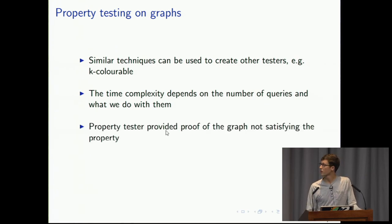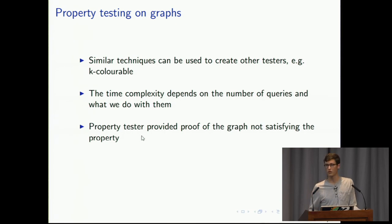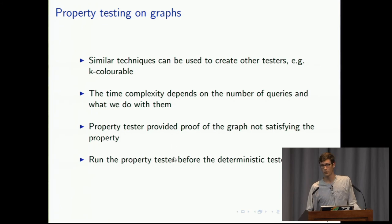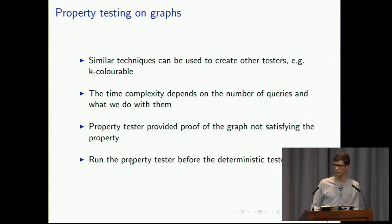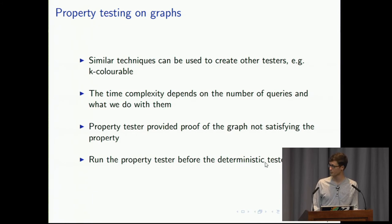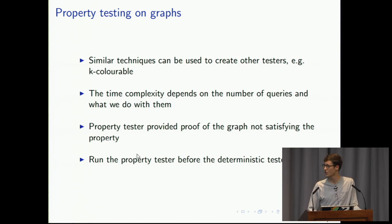Remember that the property tester for bipartiteness provided proof of the graph not being bipartite if we rejected it because we found an odd-length cycle. This is extremely useful if you want to run a deterministic tester afterwards: if the property tester rejects the input, we have proof and don't need to run the deterministic tester. We get a much better best case when the input is very far from bipartiteness, and we can optimize our deterministic testers for inputs that are actually close to bipartiteness.